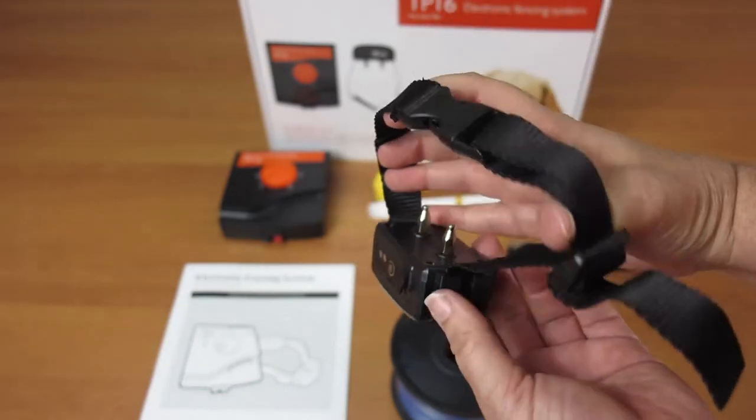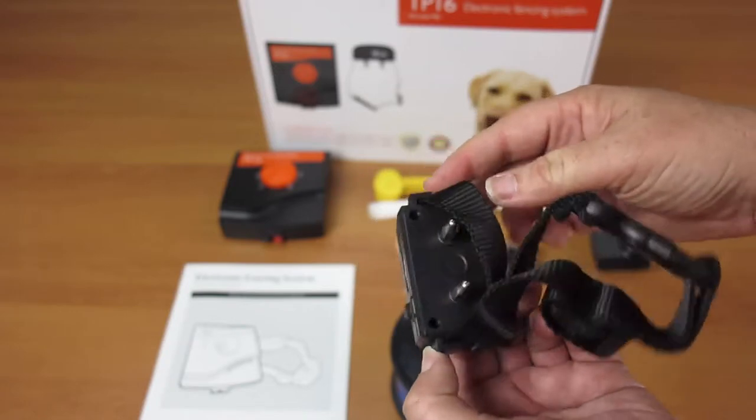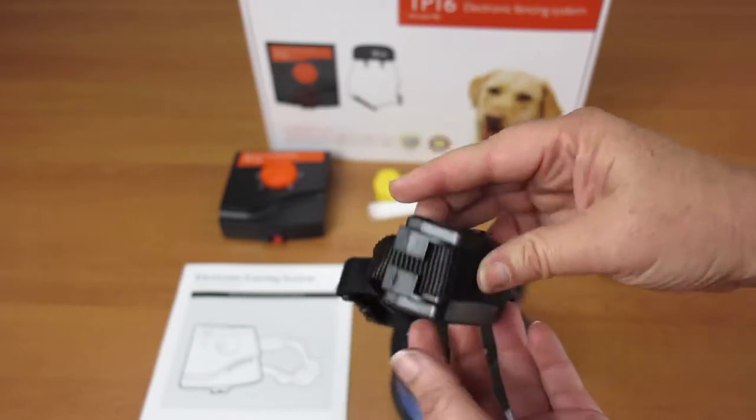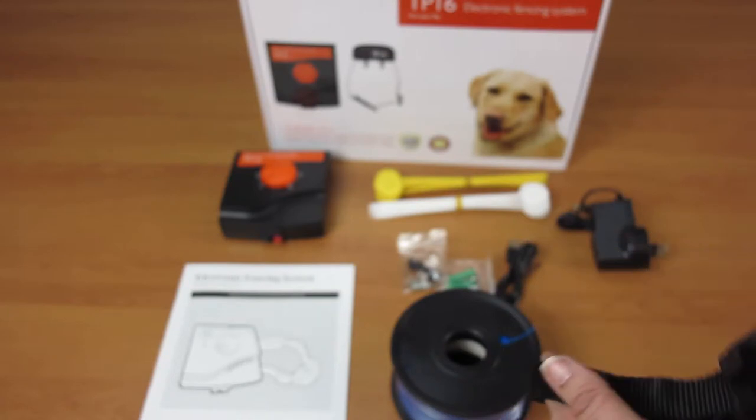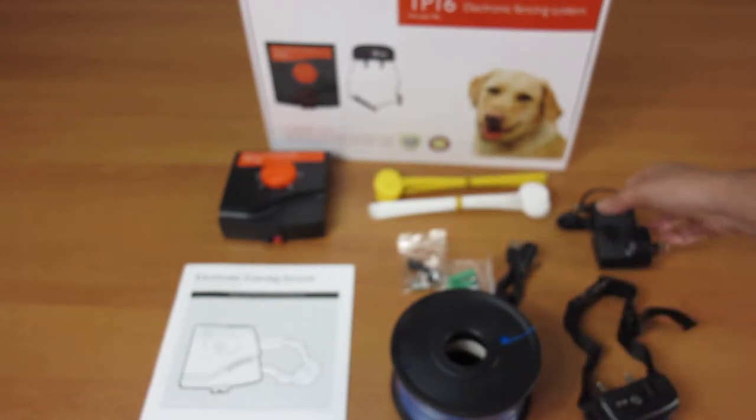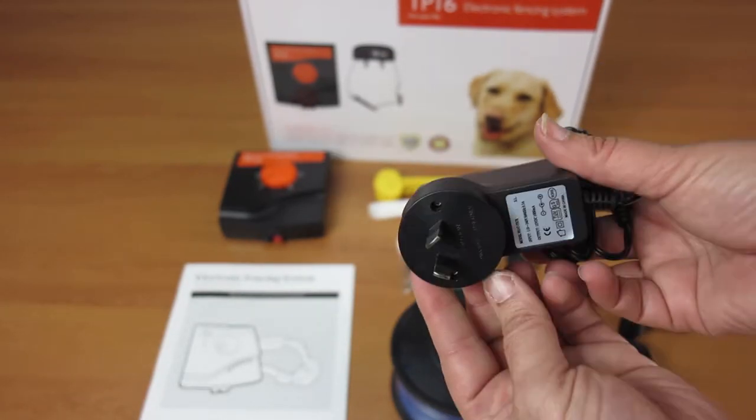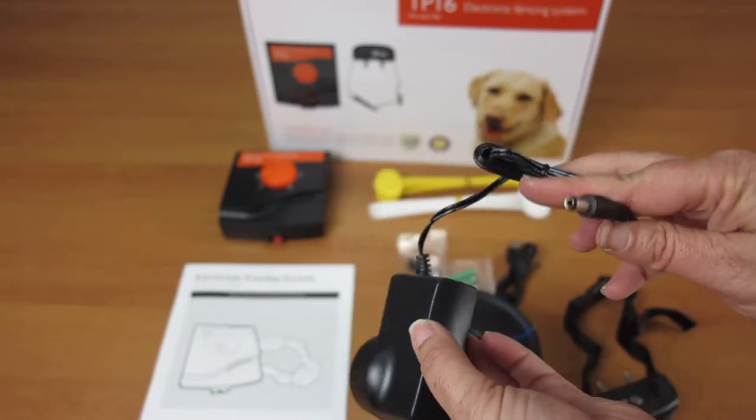Two, it's waterproof. Feels like this would be a no brainer as anything that's outside like a fence would be waterproof, but you would be surprised. Also good to know is it comes with lightning protection. So it protects your transmitter from power surges caused by lightning strikes.